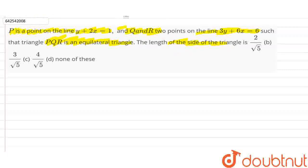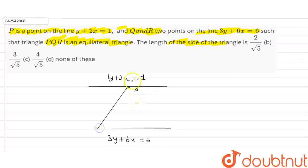So first of all we have two lines. This is a line y plus 2x is equal to 1 and this is a line 3y plus 6x is equal to 6. There is a point P here and there are two points P and Q.